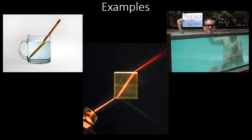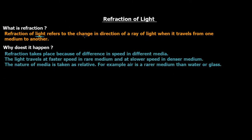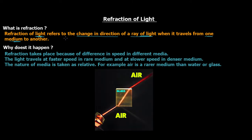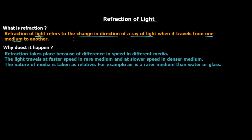Let us understand what refraction is and why it happens. In very basic terms, refraction of light refers to the change in direction of a ray of light when it travels from one medium to another. In the laser beam example, the beam started in air and entered glass — a different medium — causing a slight shift in direction. When it exited the glass and re-entered air, it changed direction again.